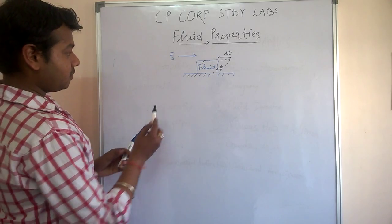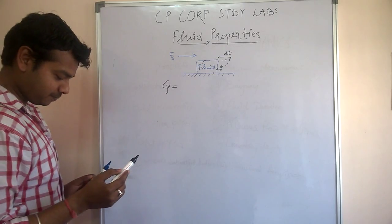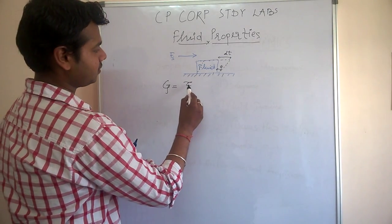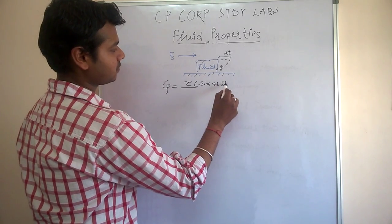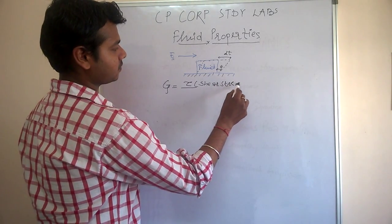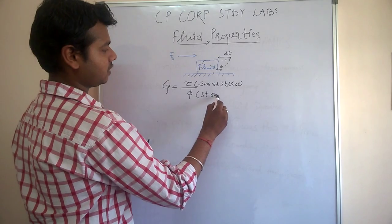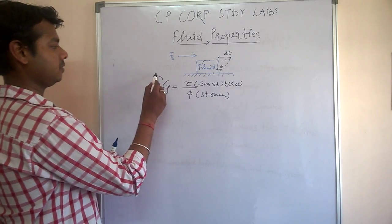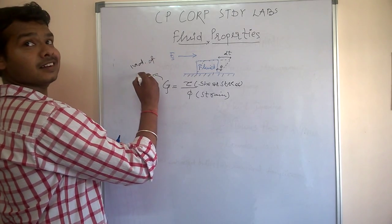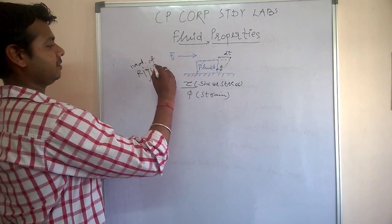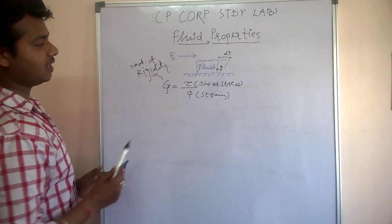Now, what is this called? As you all know, that is modulus of rigidity. G is equal to shear stress divided by shear strain. So modulus of rigidity G equals tau divided by the strain — that is shear stress over shear strain.